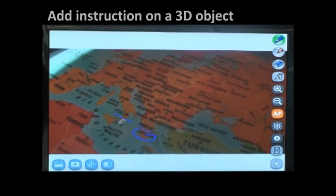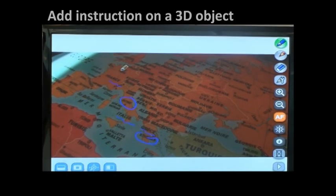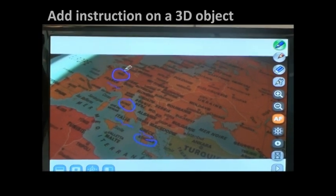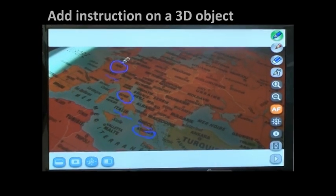Then we have Italy. The capital is Rome. We have France. The capital is Paris. So this is one of the options that we can use within geographic class.